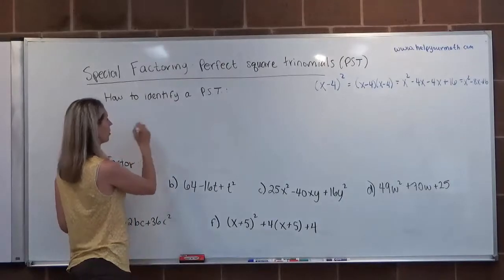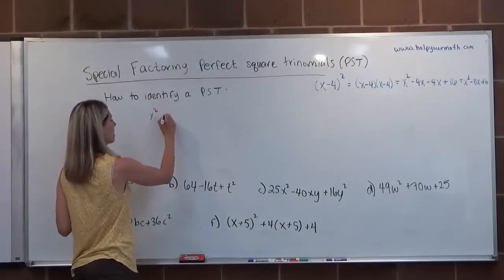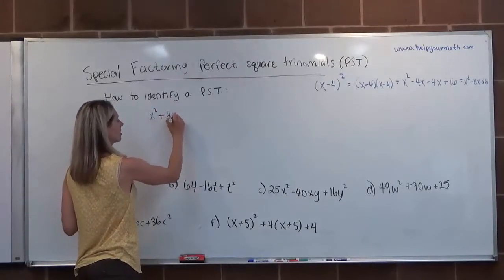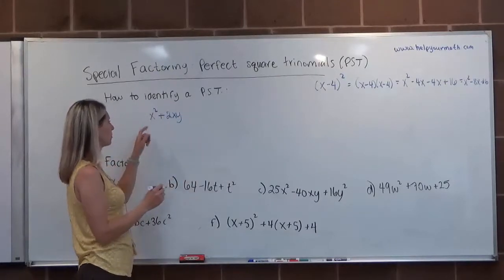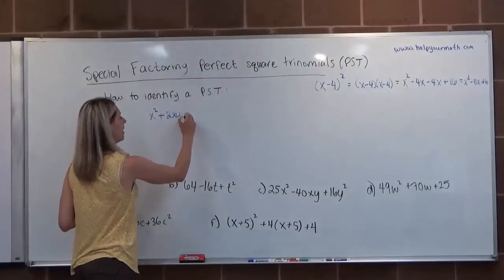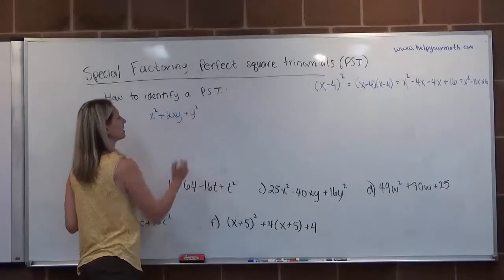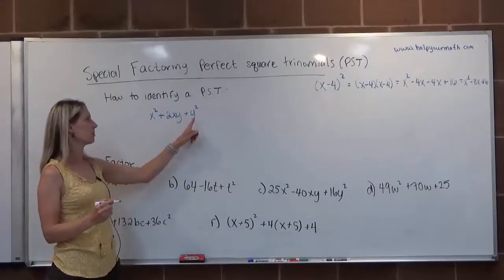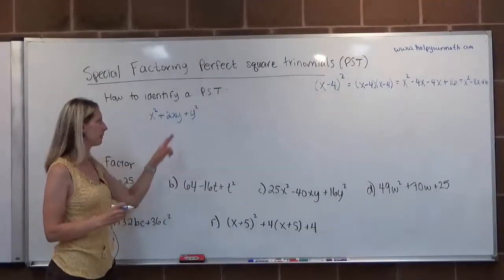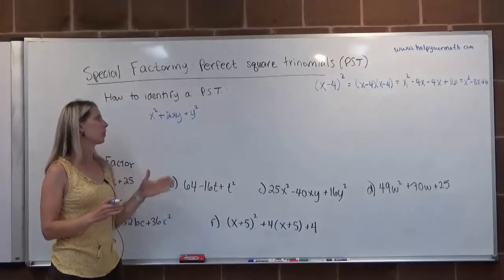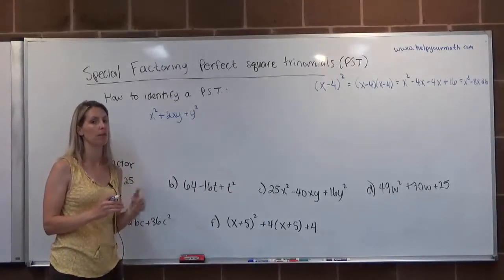We know we have a perfect square trinomial when the first term is squared, the middle term is the product of the two roots doubled, and the third term is something squared. So the first term is a perfect square, the last term is a perfect square, and the middle term is twice the product of the roots of those perfect squares.